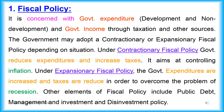First, Fiscal Policy: It is concerned with government expenditure — i.e. development and non-development — and government income through taxation and other sources. The government may adopt a contractionary or expansionary fiscal policy depending on the situation. Under contractionary fiscal policy, government reduces expenditures and increases taxes to overcome recession. Other elements include public debt management and investment and disinvestment policy.